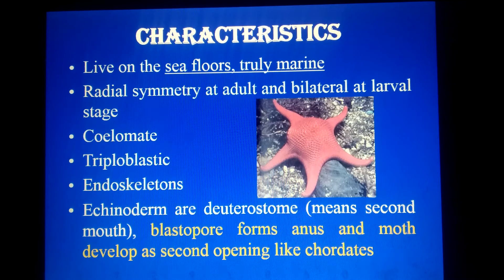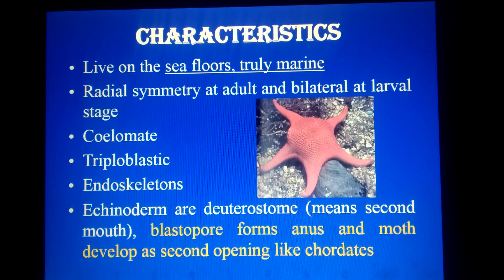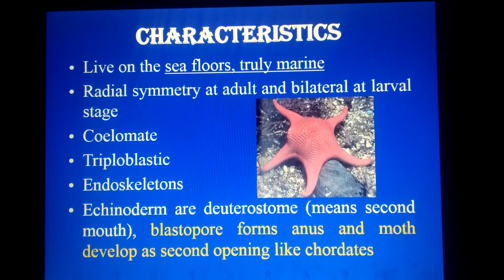Second, body symmetry: at the adult stage, their body symmetry is radial symmetry, like the less advanced animals. But at the larval stage, they have an advanced character — bilateral symmetry, like higher vertebrates and annelids and arthropods. So they have bilateral symmetry at the larval stage but radial symmetry at the adult stage.